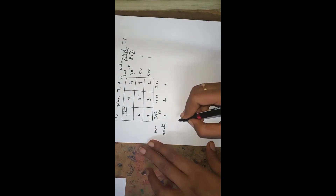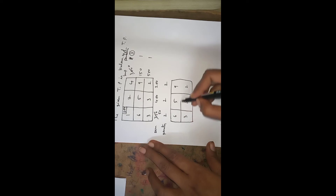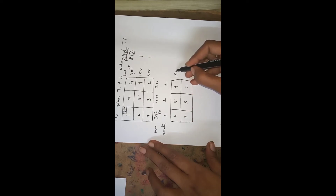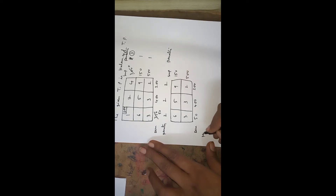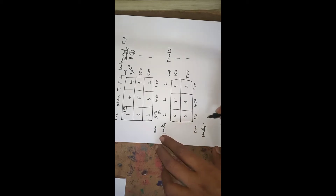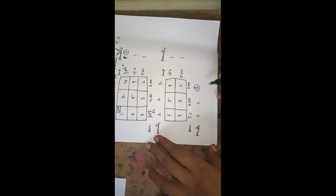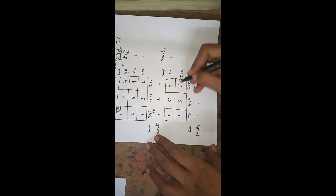Wherever we get 0, omit that row or column. The remaining values are 6, 5, 9, 3, 3, 2 with supplies 150, 500 and demands 50, 400, 200. Again calculate penalties: first row 6 minus 5 is 1, second row 3 minus 2 is 1. First column 6 minus 3 is 3, second column 5 minus 3 is 2, third column 9 minus 2 is 7. The highest penalty is 7, so enter into the last column. The least cost element in the last column is 2, so put a box there. Corresponding demand is 200 and supply is 500. Allocate 200; remaining supply is 300.